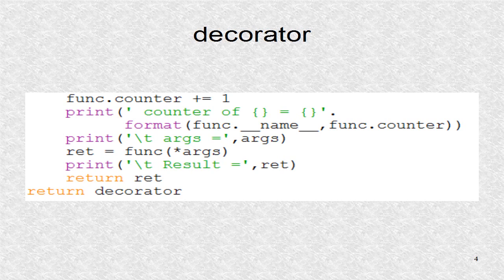Inside the function, we first increment the counter attached to a particular function. The reason this is done is because this particular function is called each time a function is executed. We print the name of the function, as well as its current counter value.